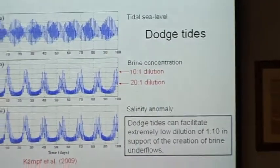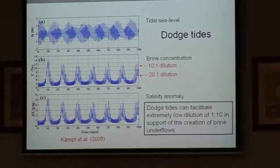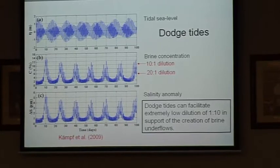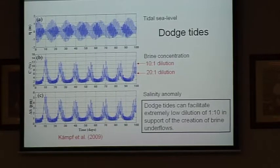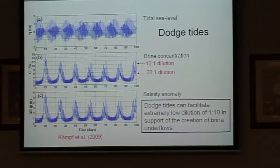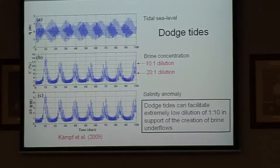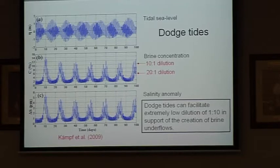This is what happens during dodge tides — one of my simulations. We have dodge tides. They haven't mentioned this in the EIS documentation. Dodge tides means that every 14 days, tidal currents become weaker — they don't necessarily disappear, but they become markedly weaker. What the tides do when they are strong is mix the water. Every 14 days, if there's no big storm, there are usually no big swells. Have you ever seen big swells coming into upper Spencer Gulf? Not really.